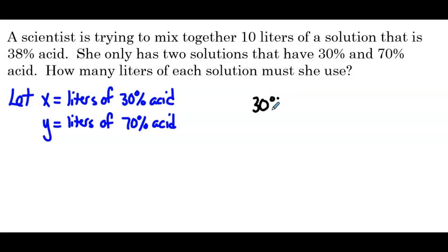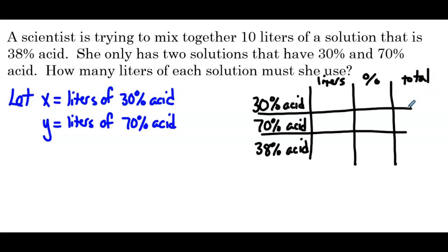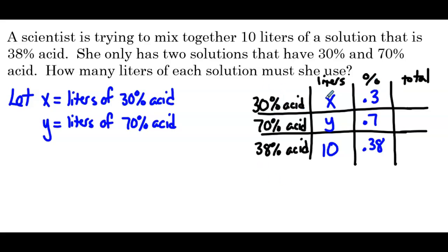So we have the 30% acid, the 70% acid, and the mixture which is 38% acid — those define the rows. The columns are: amount in liters, percentage, and total. Filling in this table: we have x liters of 30% acid, y liters of 70% acid, and the total needs to be 10 liters of 38% acid. Our percentages are 0.3, 0.7, and 0.38. Multiplying across, the totals are 0.3x, 0.7y, and 3.8.